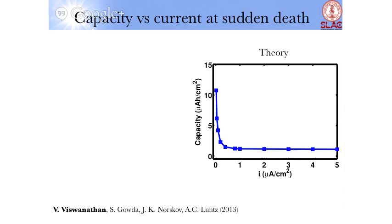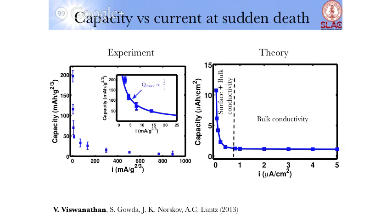This led to a theory-guided experiment. If you plot capacity — a metric for volume — as a function of current, there is a crossover: at low rates, surface conductivity dominates, while at higher rates, bulk tunneling dominates. This gives a neat functional difference between the two regimes. Experiments came out exactly confirming this: an initial 1/L-type dependence transitioning to a tapering logarithmic dependence, clearly showing surface conductivity is dominant at low rates.